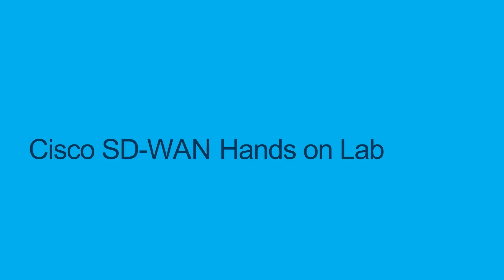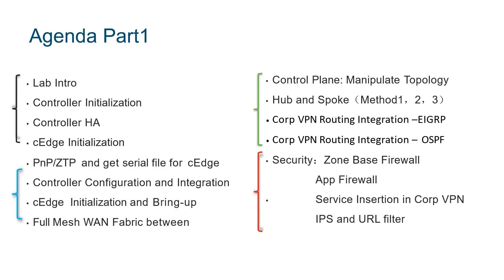Today the topic and content of our lecture is SD-WAN hands-on lab. We expect to explain the principles of SD-WAN through a series of experiments and how to apply it in our campus network, within organisational structures like headquarters and branch offices, covering how to deploy, optimise, and troubleshoot our SD-WAN. The main content is divided into two major parts to facilitate everyone's learning and grasp of their own experimental progress.